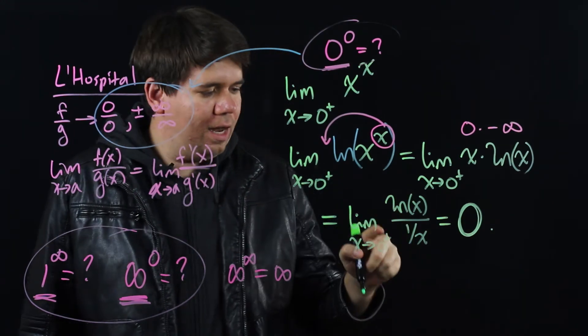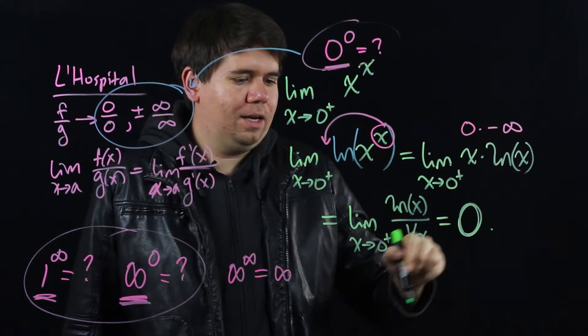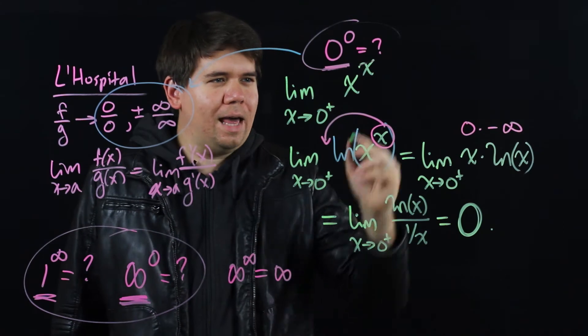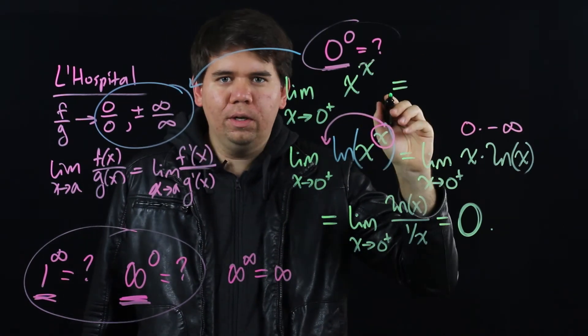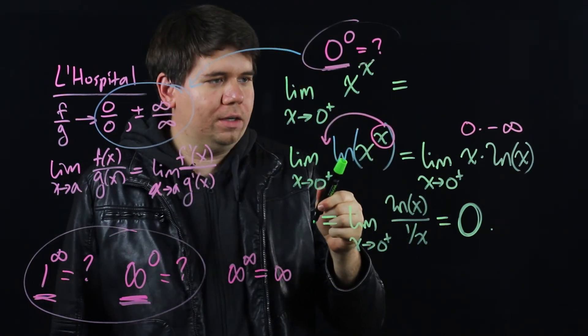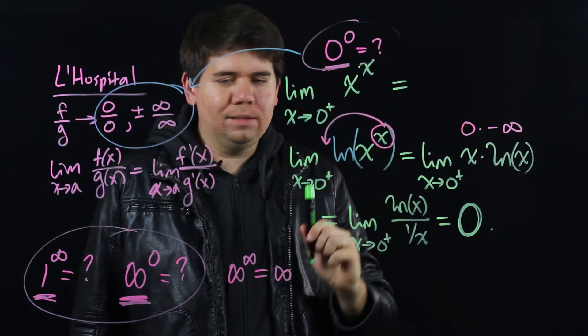You take the derivative of the top, the derivative of the bottom, you evaluate it, it comes out to be 0. Does that mean our overall limit is 0? No, not quite. Natural log of this limit is 0.